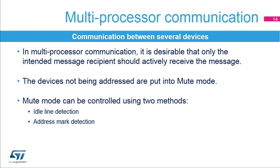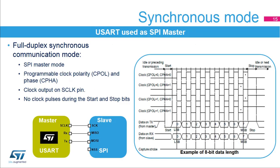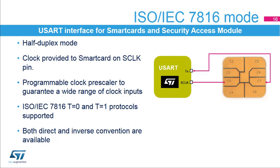To simplify communication between multiple processors, the USART supports a multiprocessor mode. In multiprocessor communication, only the intended message recipient should actively receive the message; other devices are put into mute mode using either idle line detection or address mark detection. The USART can also communicate synchronously, operating as an SPI in master mode with programmable clock polarity (CPOL) and phase (CPHA), with the clock output on the SCLK pin and no clock pulses during start and stop bits. The USART can also be used in smart card mode based on half-duplex communication, with the clock output to the smart card on the SCLK pin, supporting the T=0 protocol and features for T=1, with both direct and inverse conventions supported in hardware.